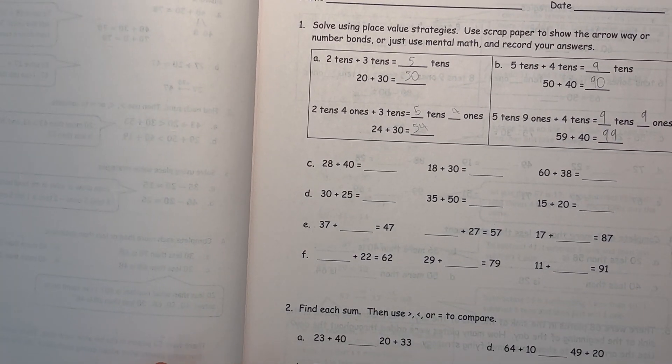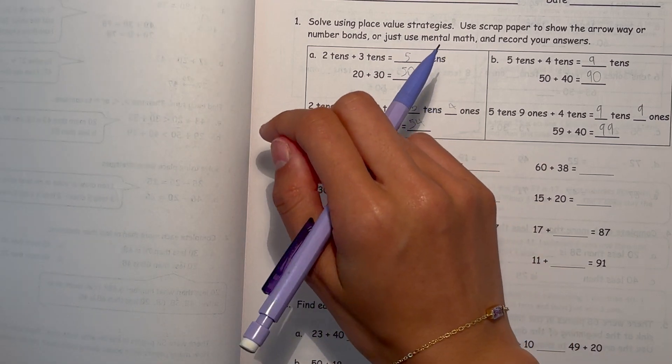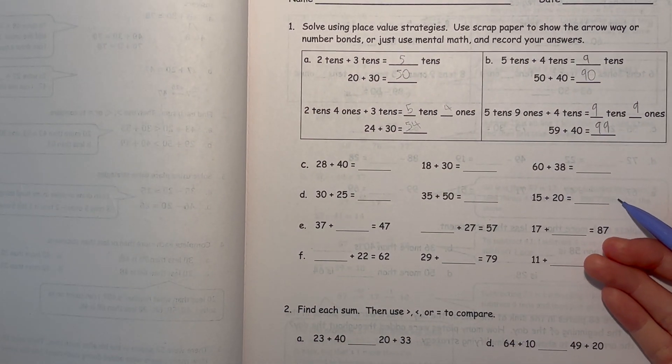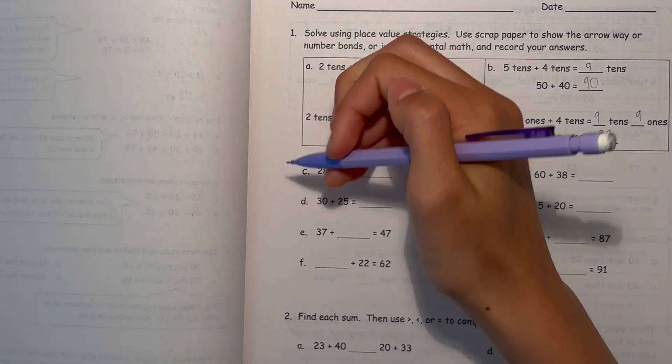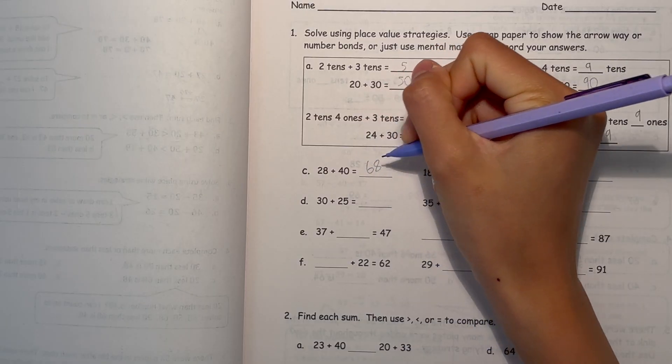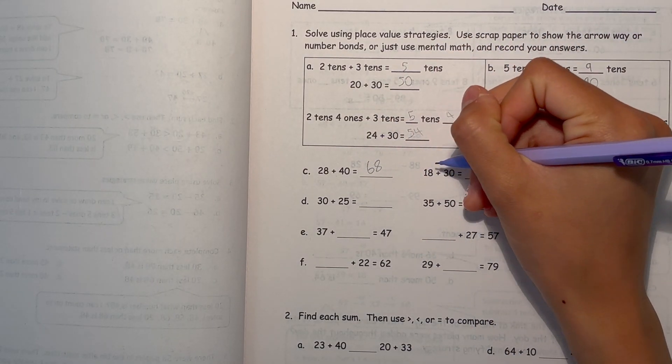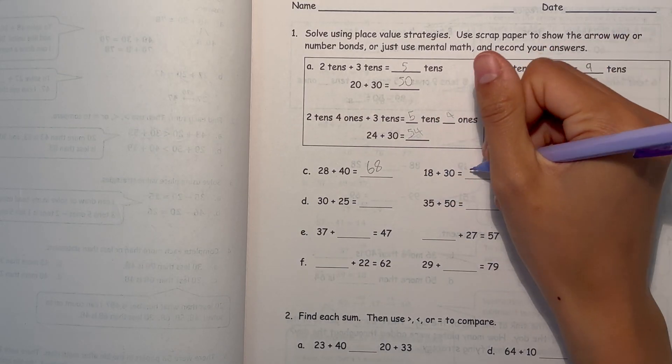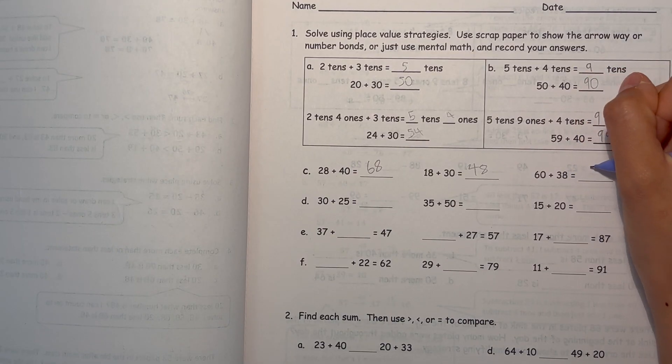Now C, 28 plus 40. So you can do this mentally too. 2 tens, 8 ones plus 4 tens. That's 6 tens, 8 ones. And 18 plus 30, you just add 30. So that's 48. And 60 plus 38, 60 plus 30 is 90 and the 8.